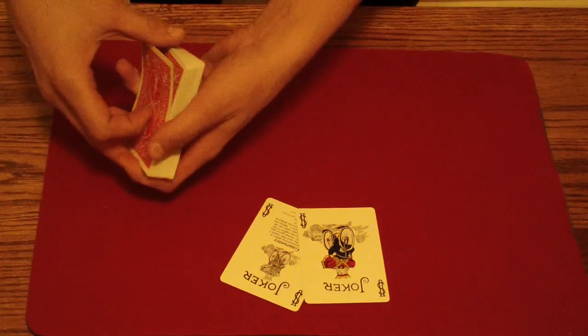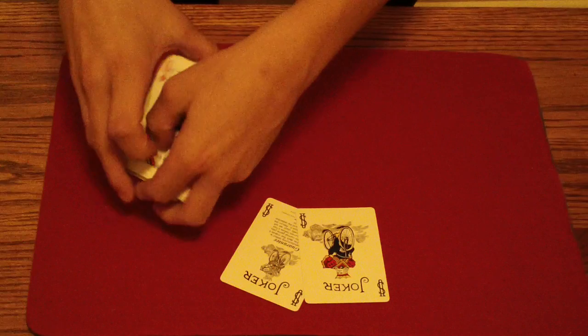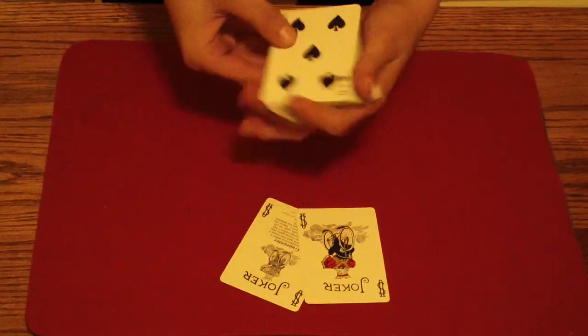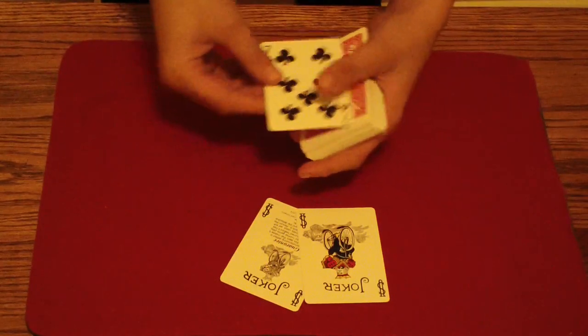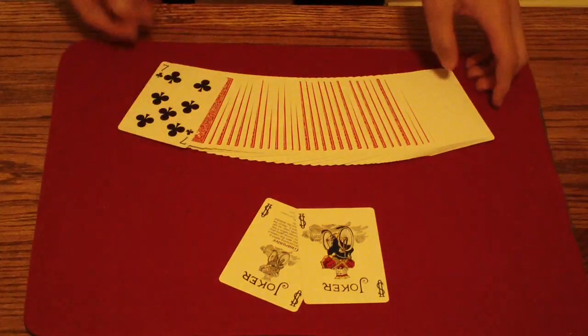So transfer it to a thumb break, take half the cards, flip them over, bring them to the top, the other half, flip them to the top. So now what you should have is the Seven of Clubs, like that, on the top.